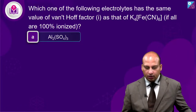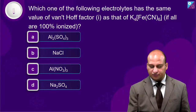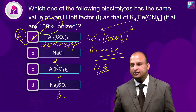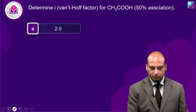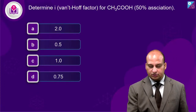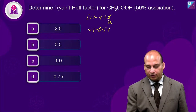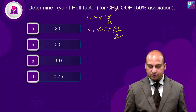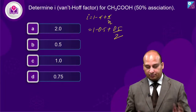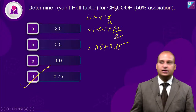Question: Which electrolyte has the same Van't Hoff factor i as K₄[Fe(CN)₆]? K₄[Fe(CN)₆] gives 5 ions, so look for an electrolyte also giving 5 ions. Next question: Derive the Van't Hoff factor for CH₃COOH with 50% association. Acetic acid forms a dimer (N=2), so i = 1 − α + α/N = 1 − 0.5 + 0.5/2 = 0.5 + 0.25 = 0.75. Answer is D.